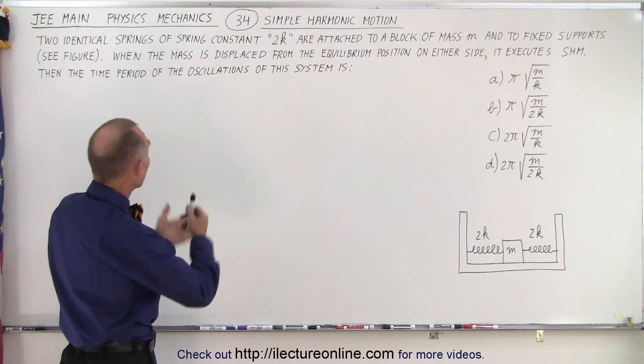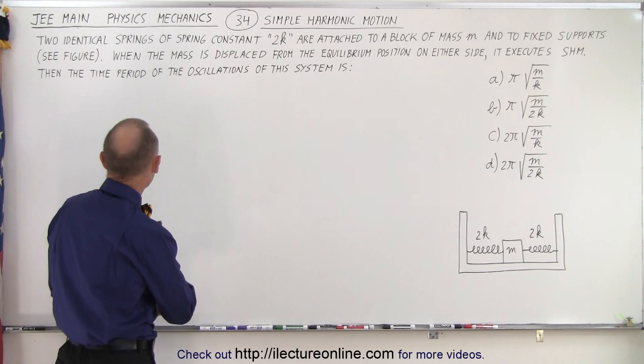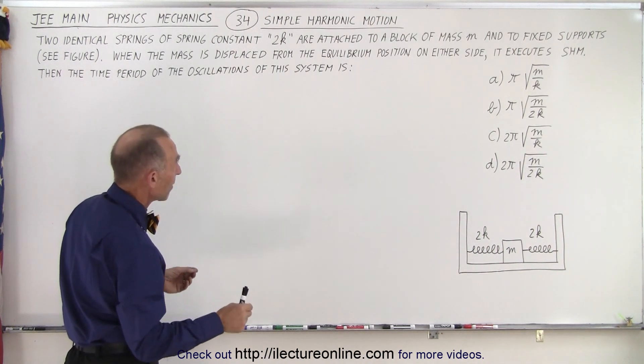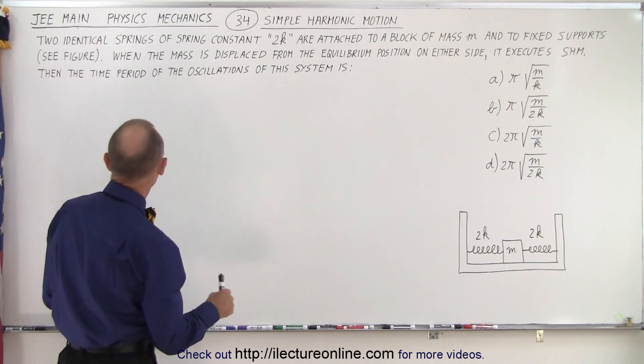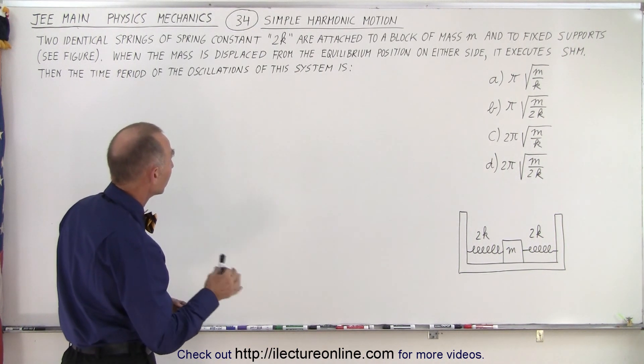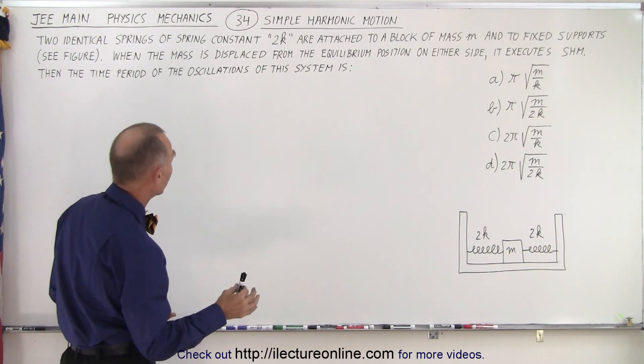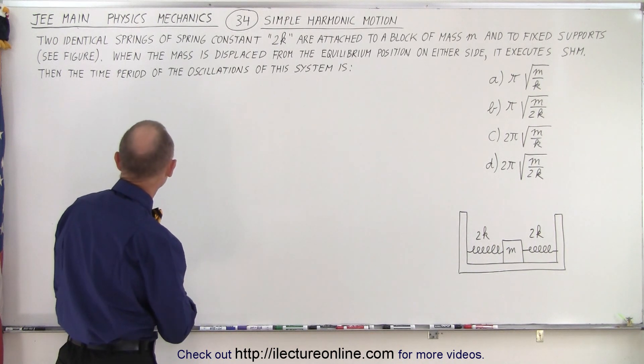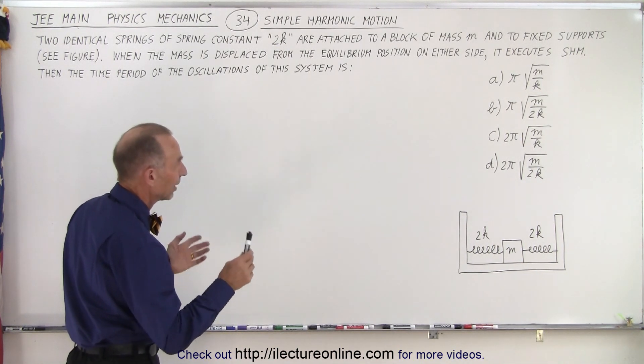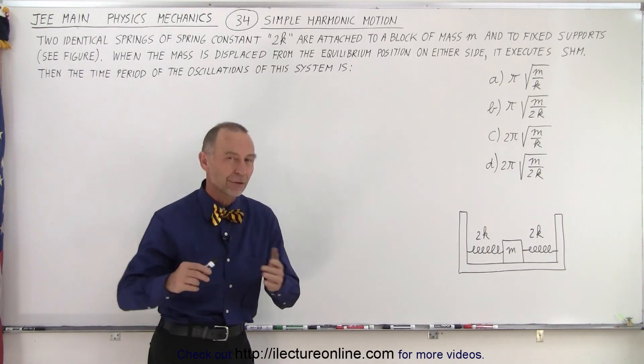It deals with simple harmonic motion. We have two identical springs of spring constant 2k which are attached to a block of mass m and to fixed supports (see the figure). When the mass is displaced from the equilibrium position on either side, it executes simple harmonic motion. Then the time period of the oscillations of the system is—and so all we have to do is find the period of the system.